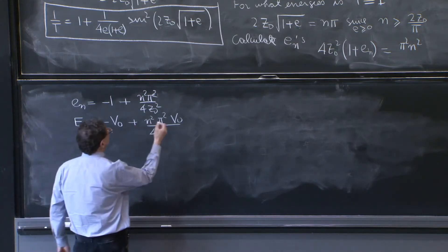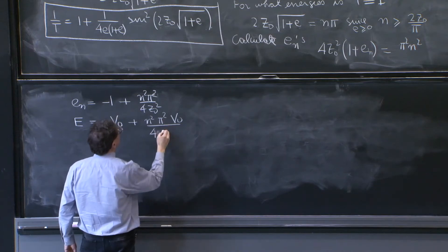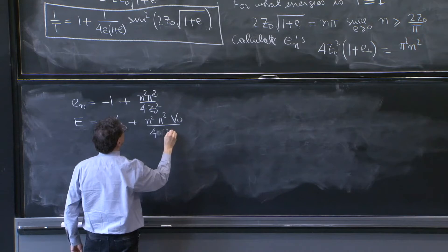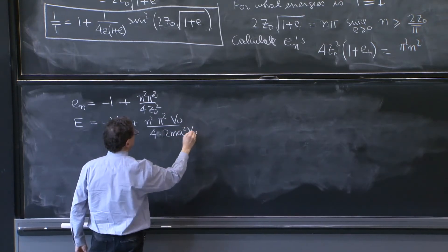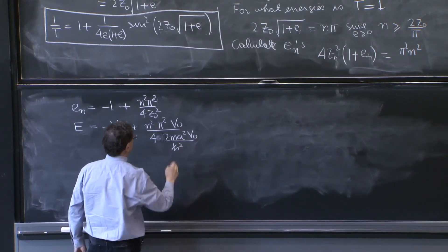I'm going to go all the way back to conventional language. 2, 4 times z0 squared, which is 2ma squared v0 over, h bar, h bar squared.